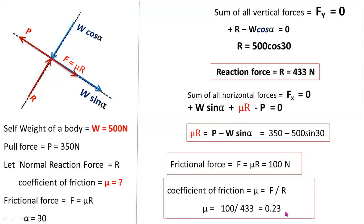Note that there are no units for the coefficient of friction. The frictional force has units of newtons and the reaction force also has units of newtons, but the coefficient of friction has no units. The value of coefficient of friction always lies between 0 and 1, and is always positive.